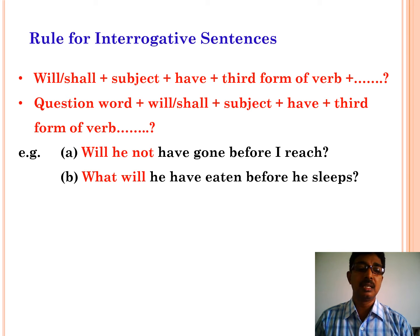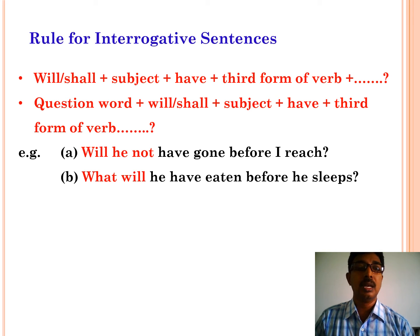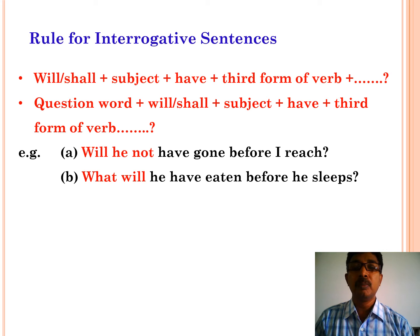Now let us see the rules for interrogative sentences in future perfect tense. The structure begins with: will or shall — plus subject — plus have — plus third form of the verb — plus object — plus question mark. For example: will he not have gone before I reach? Second example: what will he have eaten before he sleeps?